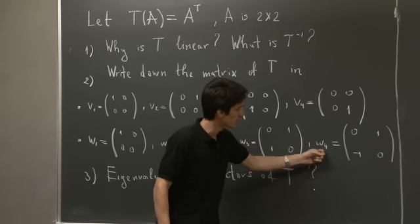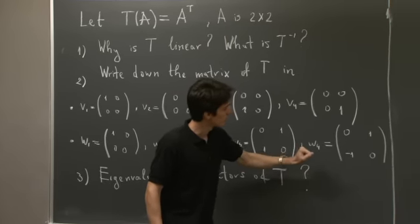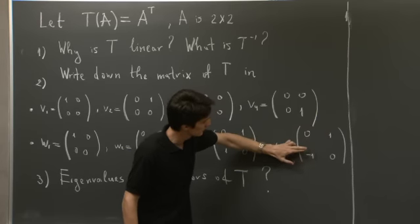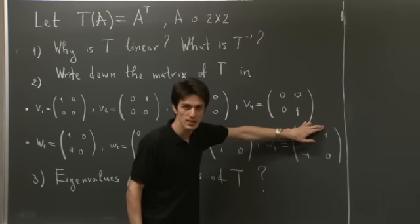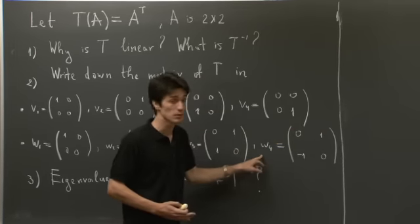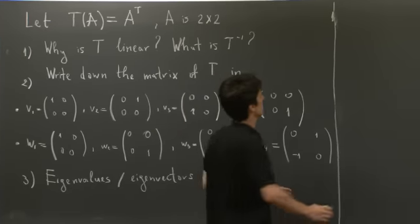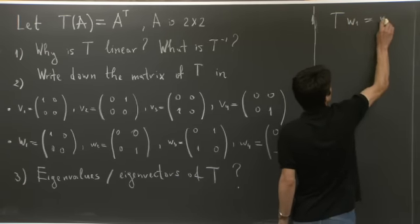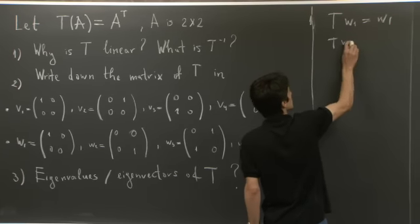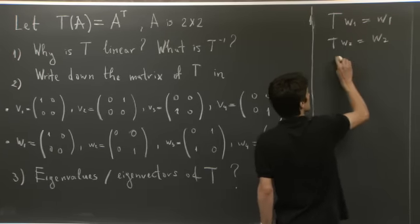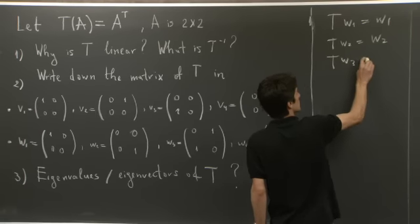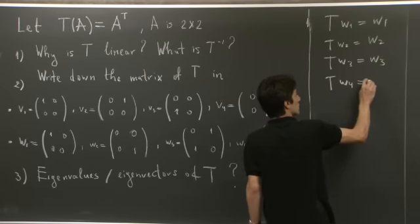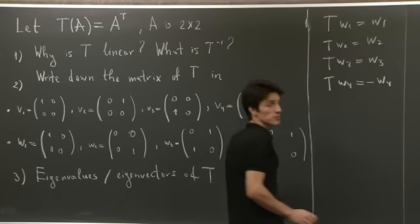What about w4? Well, we see that the 1 comes down here, the negative 1 comes up here. And in the end, we just get the negative of w4. So let me just write this out. We had T of w1 equal to w1, T of w2 equal to w2, T of w3 equal to w3, and T of w4 was negative of w4.